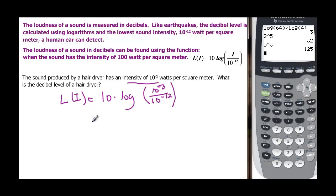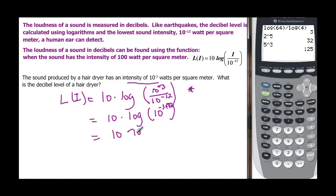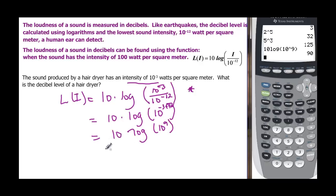This is just a plug-and-chug — you could enter it directly into your calculator. Using exponent properties, when you have the same base and are dividing, you subtract exponents: negative 3 minus negative 12 equals positive 9. So this becomes 10 times the log of 10 to the 9, which equals 10 times 9, giving us 90 decibels.